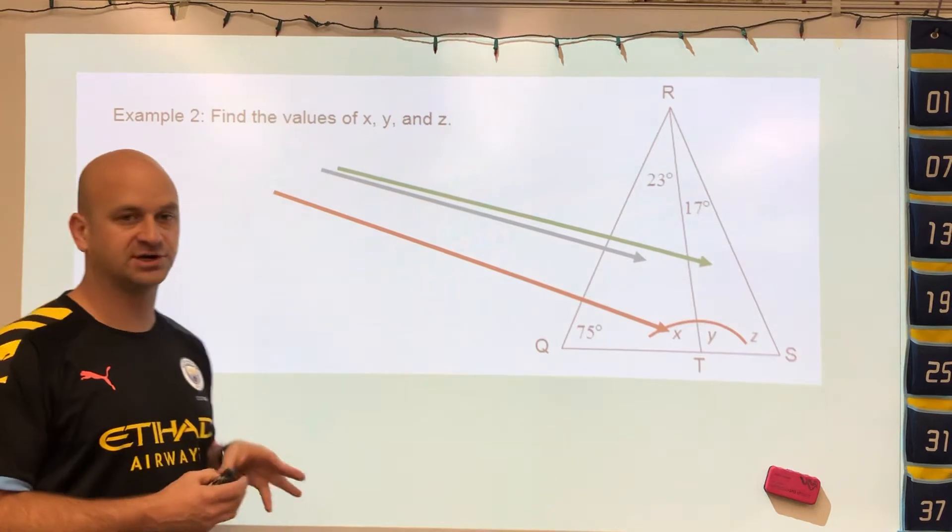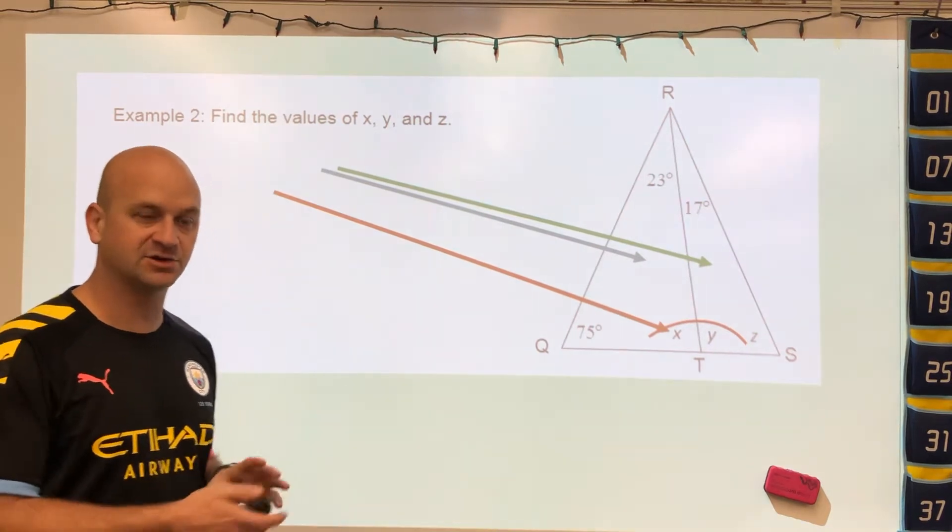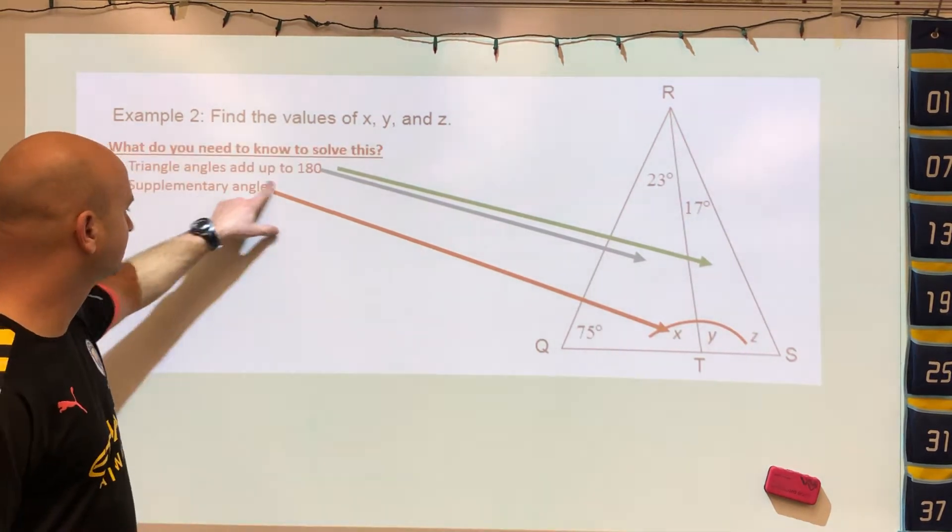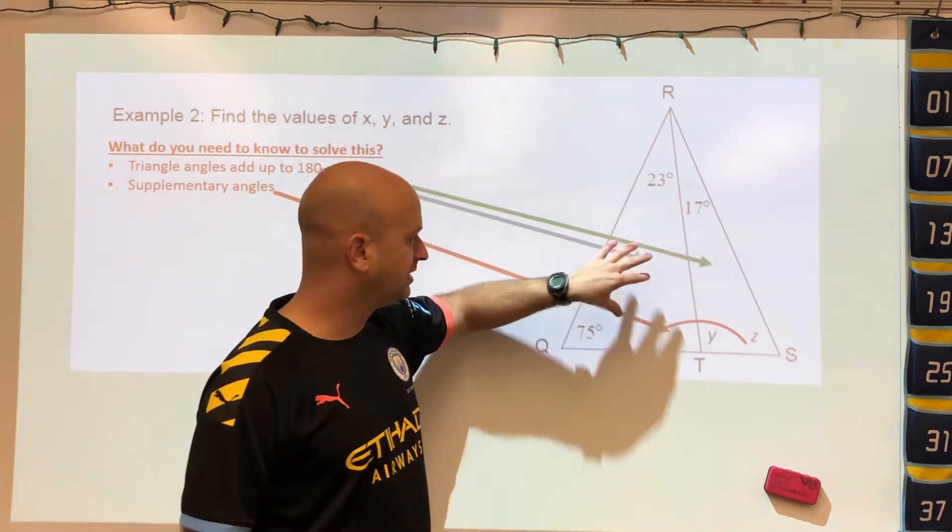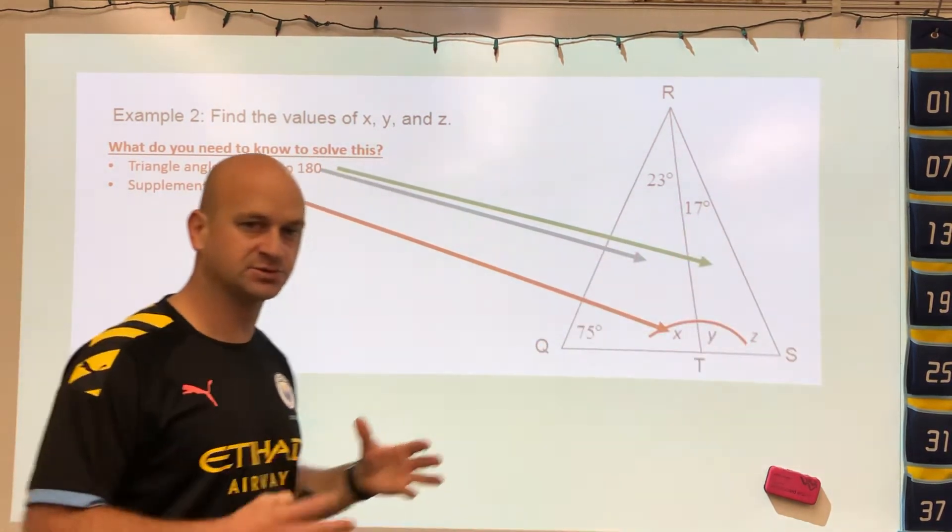In this example here we have two triangles combined and they want you to find different angle measures. If we look here, first off we have three triangles - the left, the right, and both - and in each of these triangles the angles will add up to 180.